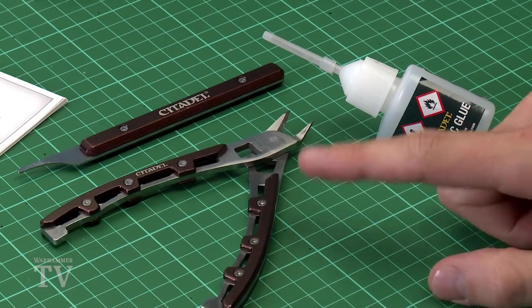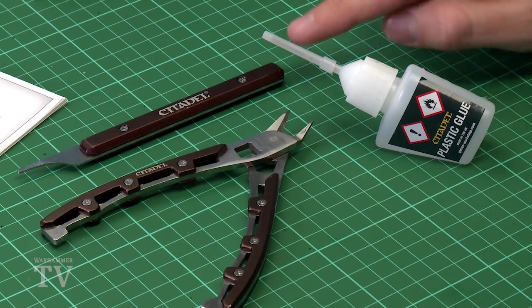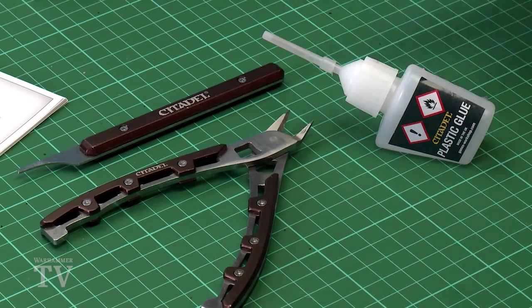So this one is assembly number 43 and it's labeled walls. Now to build these buildings what you're going to need is a selection of tools. You'll need a set of clippers just like these, a mold line remover as well, and also you're going to need some plastic glue too.